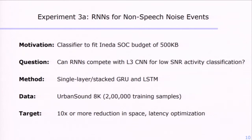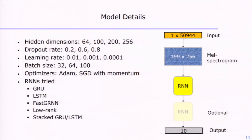Now we go to the SONYC project of tackling noise complaints in New York City. To remind you of the motivation, we have to fit a relatively large classifier — the L3 embedding — onto a 500-kilobyte budget. We took two directions: one was whether RNNs can work out of the box to tackle the problem, and whether we even need an embedding for non-speech acoustic events. We tried extensively with single-layered or stacked GRUs and LSTMs and some variants such as FastGRNN, using the UrbanSound 8K dataset with around 200,000 training samples. We compute a MEL spectrogram of 199 timesteps across 256 filter banks as input to the RNN.